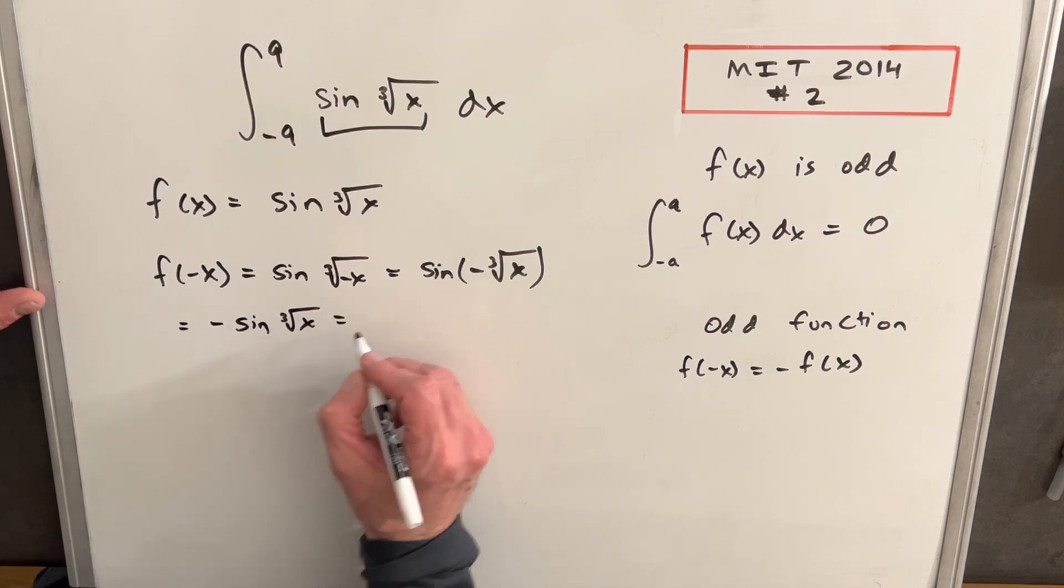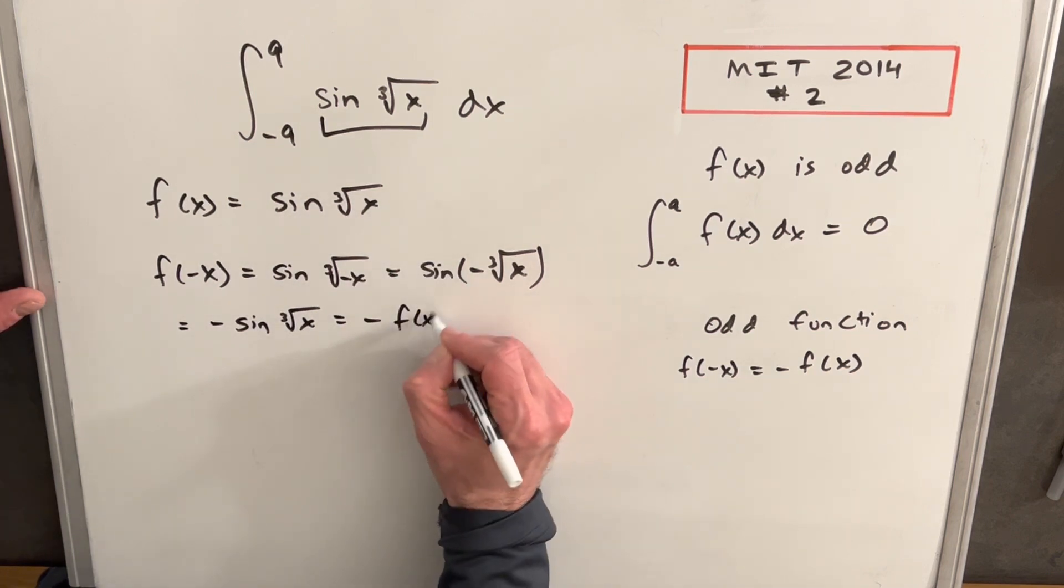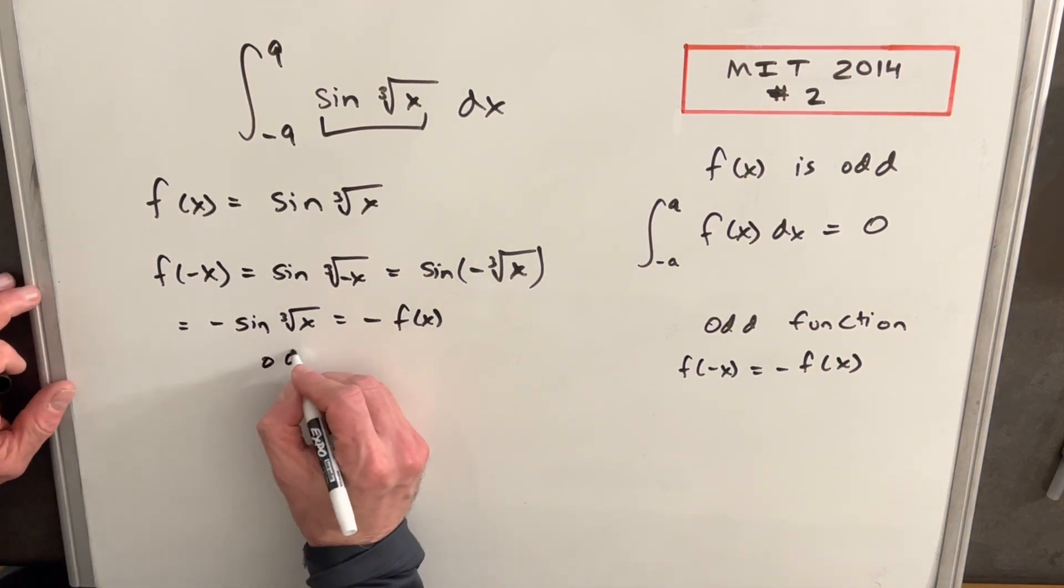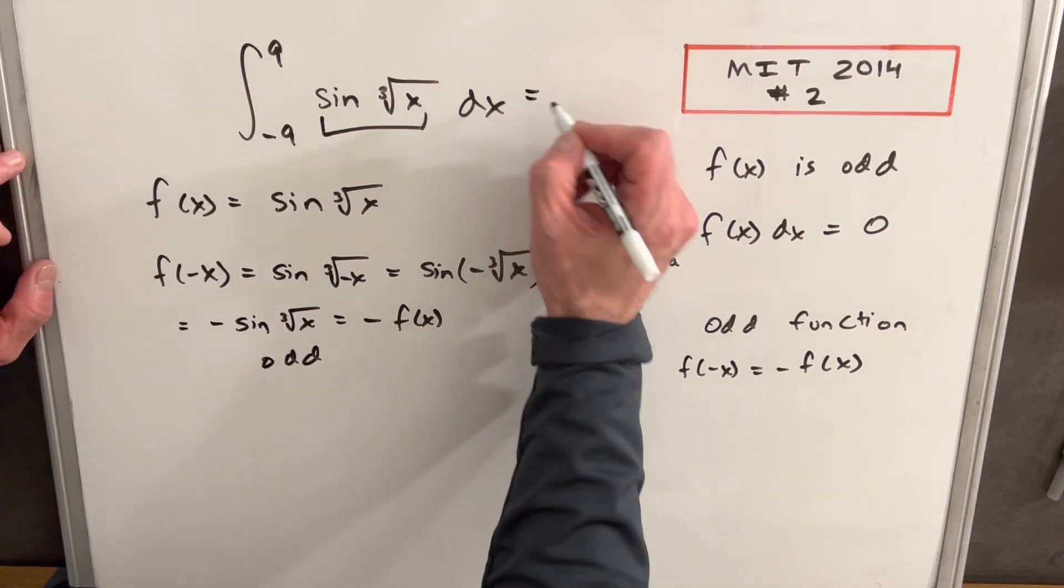But that's just minus our original thing here f of x. And then we've shown that f minus x is minus f x, so therefore this function is odd and that means this whole integral is going to be zero.